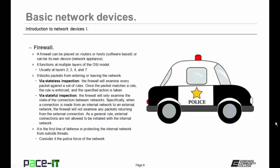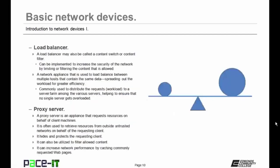A firewall that uses stateful inspection will only allow connections to be made from inside to outside — it will not allow that outside entity to initiate a connection with an inside host. Firewalls are usually the first line of defense in protecting the internal network from outside threats. You can consider the firewall as the police force of the network. Then we have load balancers.